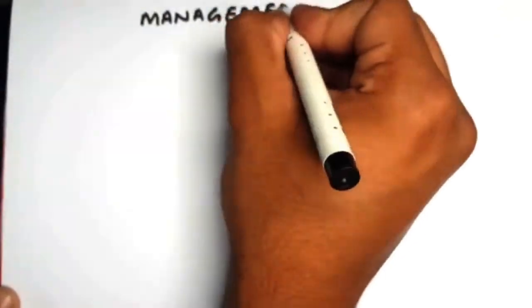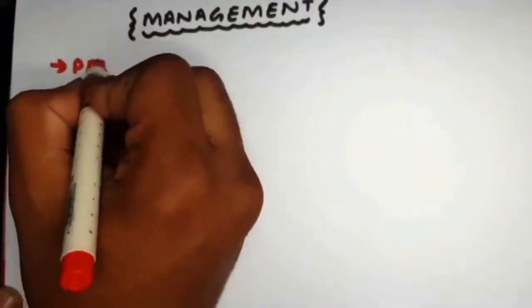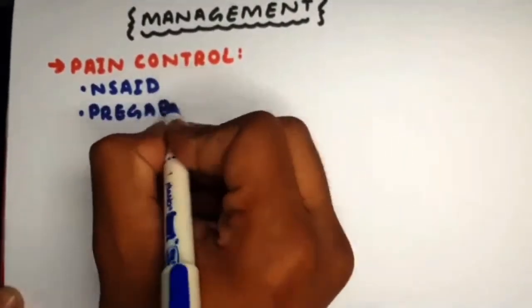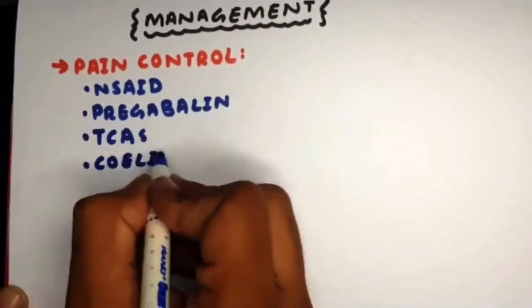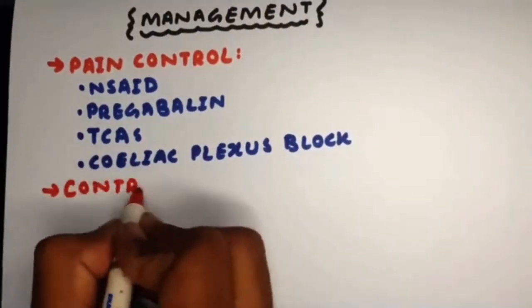When managing such patients, the first step is pain control through NSAIDs, pregabalin, tricyclic antidepressants at low dose, and celiac plexus block for long-lasting effect.